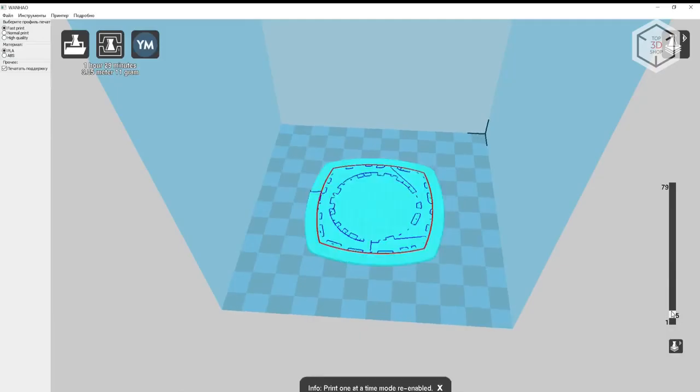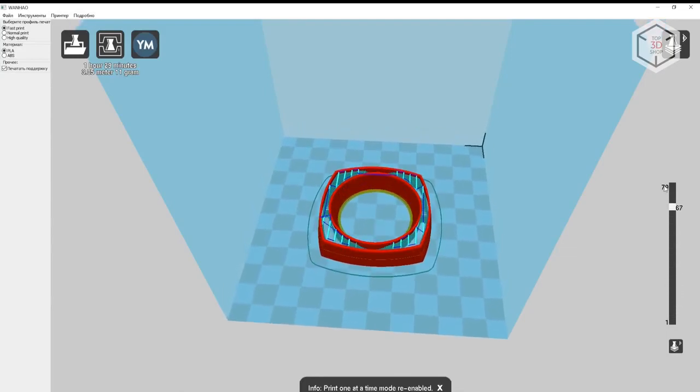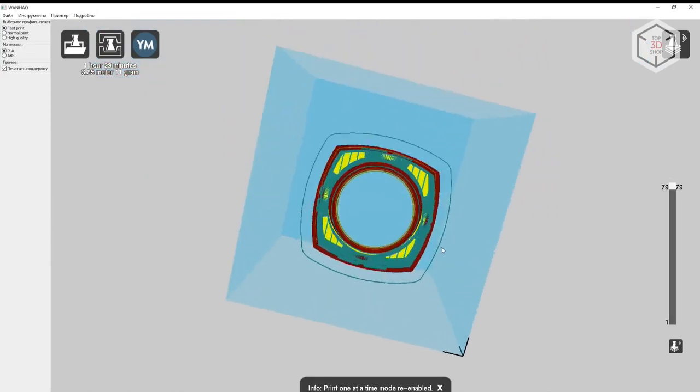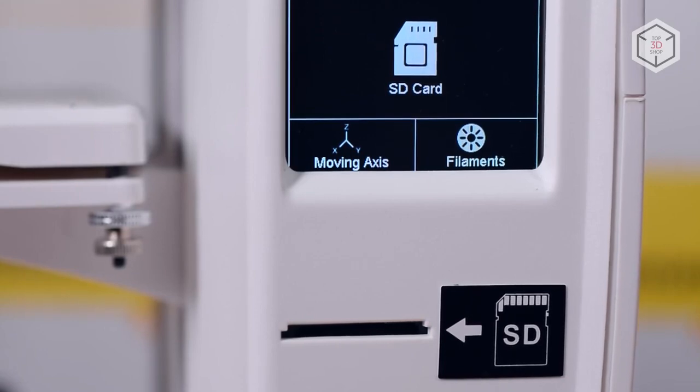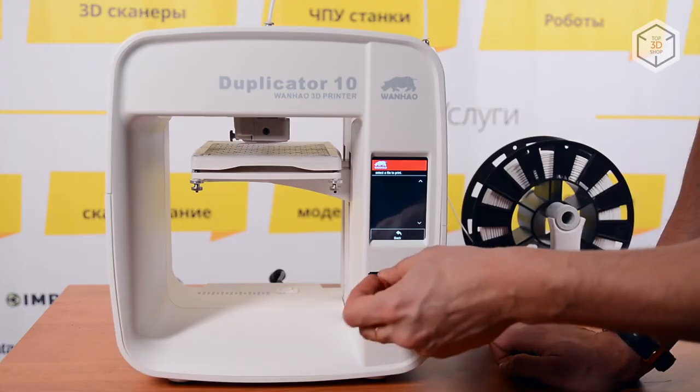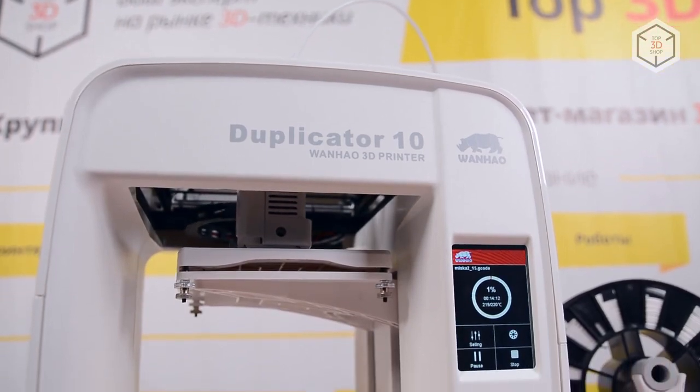To prepare a 3D model, the developer suggests using a special version of the Cura Wanhao edition slicer. The G-code can be transferred to the printer's memory with an SD card. You can find the SD card slot on the front panel. The 3D printer itself is compact and the printing area is small.